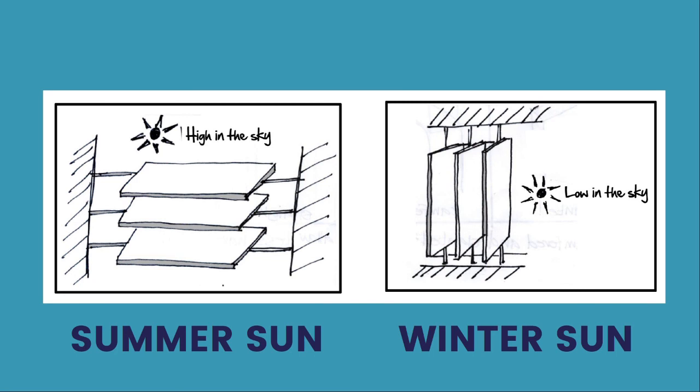When it comes to shading, there are two styles. Horizontal shading is mainly for the summer sun because the sun is high in the sky — the horizontality cuts that sun. Vertical shading is generally for the winter sun, which sits low in the sky. On your west elevation, when the winter sun is sitting really low, it's good to have vertical louvres on that side.